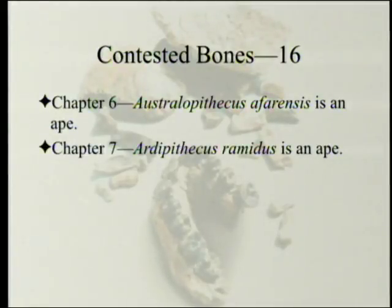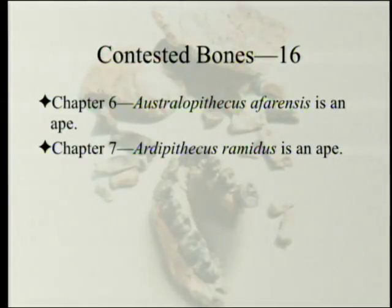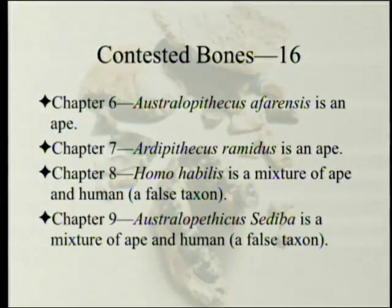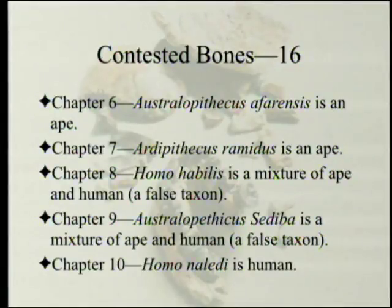In Chapter 6, Australopithecus afarensis is an ape—the human-like parts are the parts that are missing. In Chapter 7, Ardipithecus ramidus is an ape; again the human-like parts are the missing parts, and of interest, they're different parts. Chapter 8: Homo habilis is a mixture of ape and human—not really a single animal. Chapter 9 says the same is true for Australopithecus sediba. Chapter 10: Homo naledi is human, just degenerative, somewhat like Homo floresiensis.